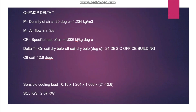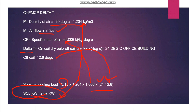Applying the formula: airflow is 150 L/s, converted to 0.150 m³/s, divided by 1,000. Multiplying by density 1.204, then Cp 1.006, then ΔT = 24 − 12.6 = 11.4°C, the result is 2.07 kW. This matches exactly the sensible load value given in the HVAC unit schedule, confirming the parameters are correctly specified.